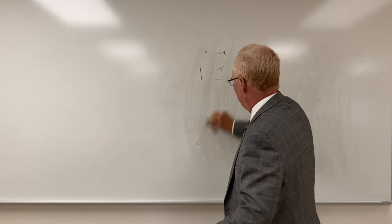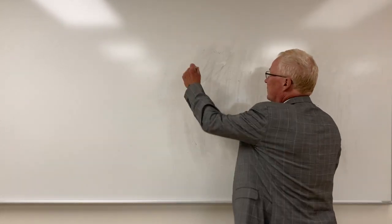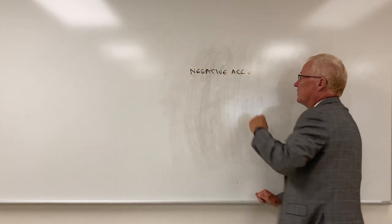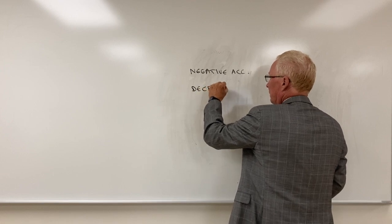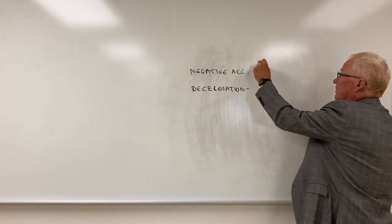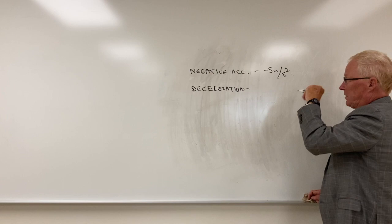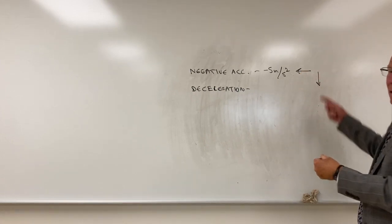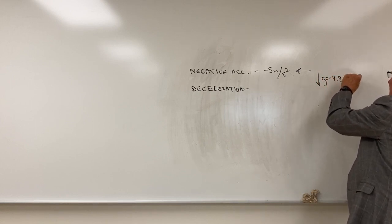So we'll continue on here. There's a concept of negative acceleration and deceleration. Negative acceleration means the acceleration is negative, such as minus 5 meters per second squared, which would mean the acceleration would be to the left if horizontal, or downwards if we're doing vertically — such as gravity, g, which is minus 9.8 meters per second squared.